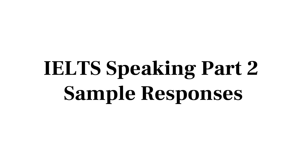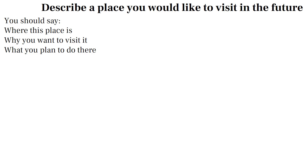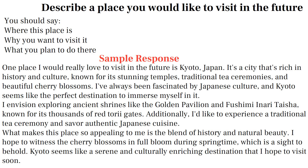Here are sample IELTS Speaking Part 2 cue cards along with sample responses. One place I would really love to visit in the future is Kyoto, Japan. It's a city rich in history and culture, known for its stunning temples, traditional tea ceremonies, and beautiful cherry blossoms. I've always been fascinated by Japanese culture, and Kyoto seems like the perfect destination to immerse myself in it. I envision exploring ancient shrines like the Golden Pavilion and Fushimi Inari Taisha, known for its thousands of red torii gates. Additionally, I'd like to experience a traditional tea ceremony and savor authentic Japanese cuisine. What makes this place so appealing is the blend of history and natural beauty. I hope to witness the cherry blossoms in full bloom during springtime. Kyoto seems like a serene and culturally enriching destination that I hope to visit soon.